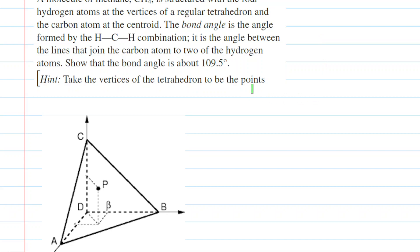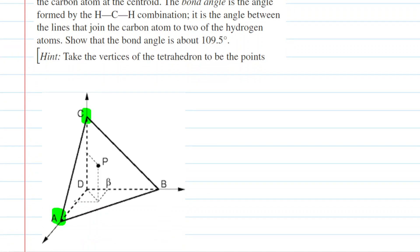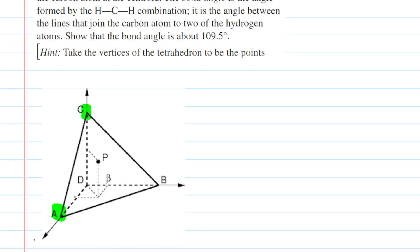We've gone ahead and drawn a tetrahedron here. Let's locate the hydrogen atoms first. We're going to imagine there's a hydrogen atom located at vertex A, and then a second hydrogen atom located at vertex C. What we would like to do is identify the x, y, z coordinates of those two points. We can assign this axis as the x-axis, this will be our y-axis, and the z-axis will be going this way.